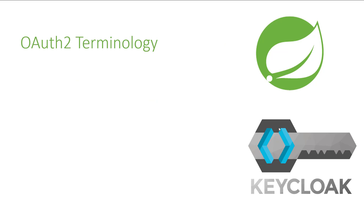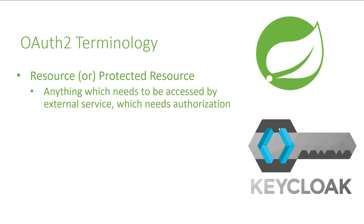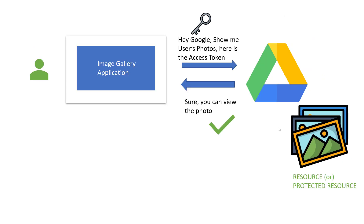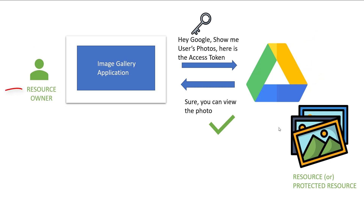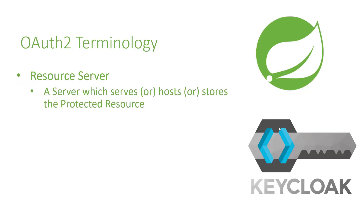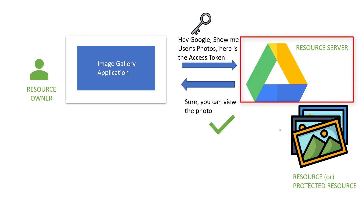To implement OAuth and understand different kinds of OAuth flows, you need to get familiarized with OAuth terminology. The first term is a resource or protected resource — in our image gallery example, this is the photos stored inside our Google Drive account. Anything which needs to be accessed by an external service and requires authorization is called a resource. The next term is resource owner — the owner of the resource, in this case the person who owns the photos. The next term is resource server — the server that stores or hosts the resource, in our case the Google Drive server.